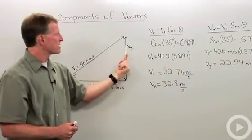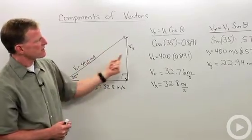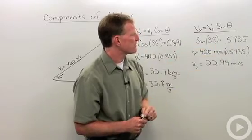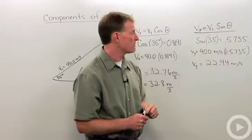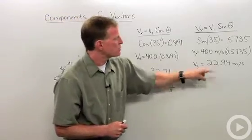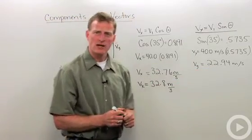Remember, sine is a relationship between this and this, this side and this side. So in this case, the sine of 35 degrees is 0.5735, and I multiply that by 40 meters per second, I get 22.94 meters per second.